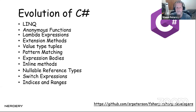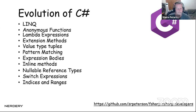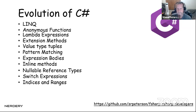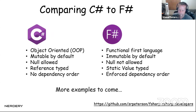Let's briefly look at the evolution of C# features that have been emerging since .NET 2.0 when LINQ came out with anonymous functions. Throughout the years C# has been adopting functional-type features, especially since C# 7. We now have extension methods, value type tuples, pattern matching, expression bodies, and inline methods. C# 8 adds nullable reference types, switch expressions, indices and ranges. C# 9 will introduce record types and other features.